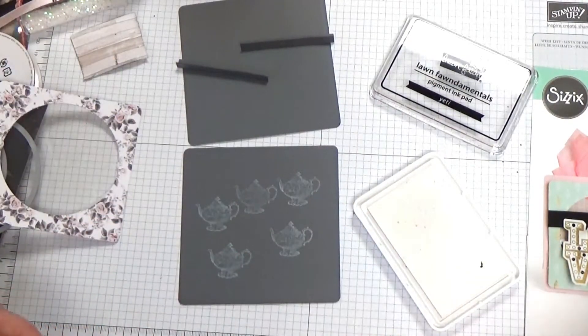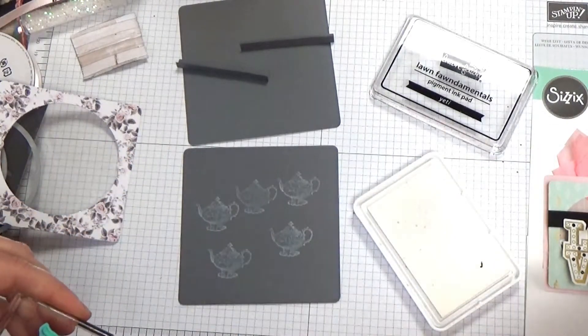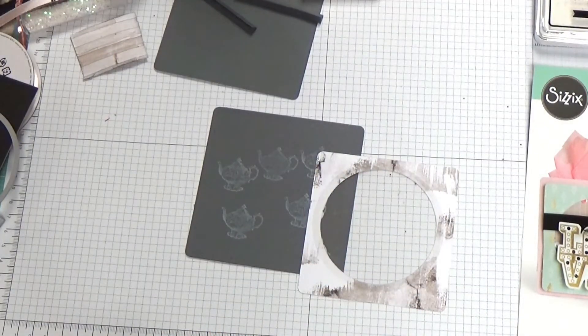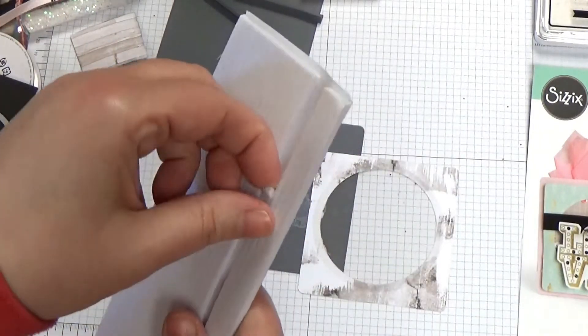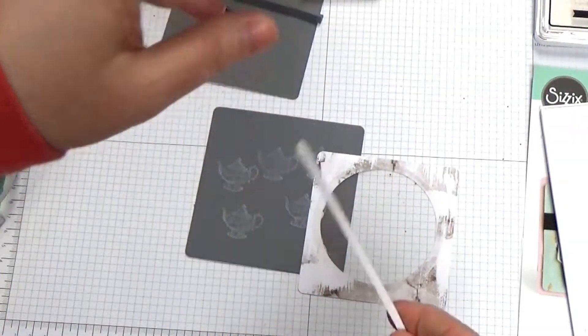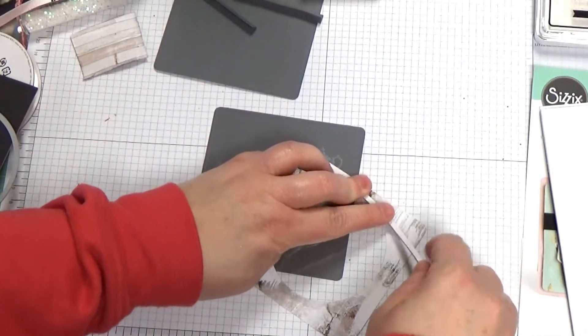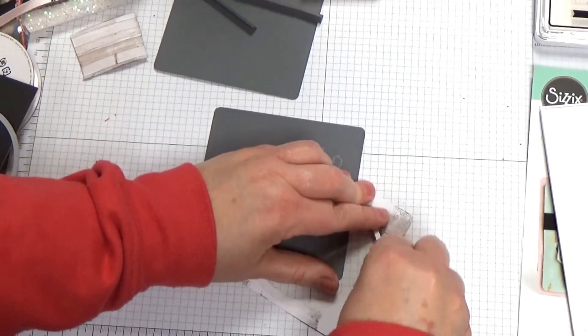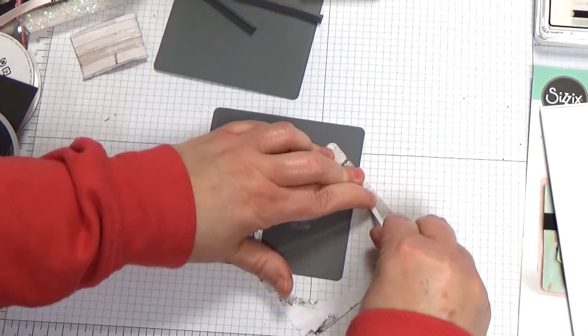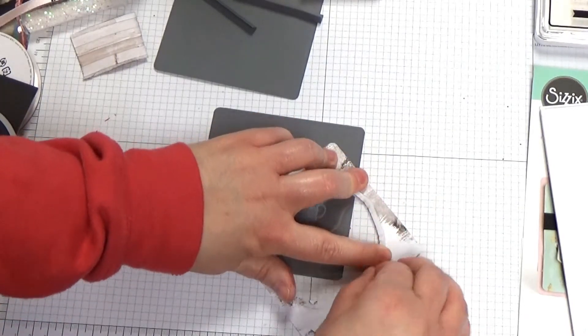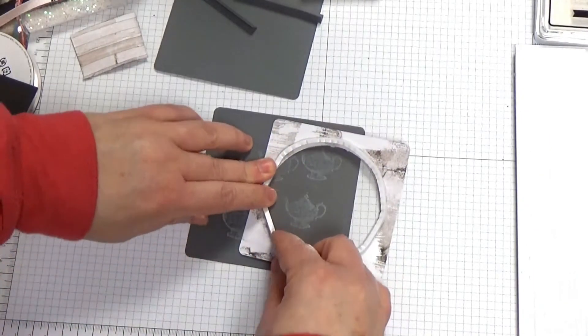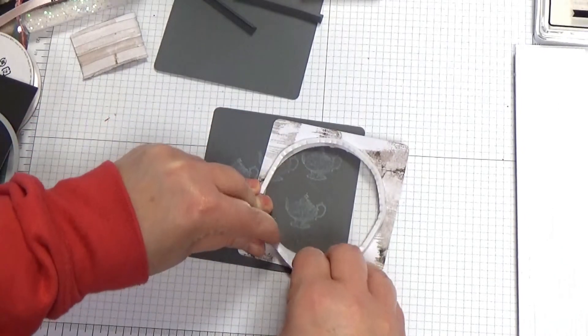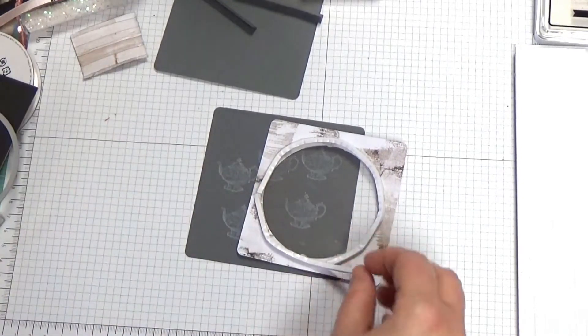These sequins will be bouncing around in here. I'm going to put some foam tape around the edge here. I'm going to use the Stampin' Up strips - they work really nice. You can just go right around this edge and manipulate it to fit around that circle. Don't want to leave any gaps because then our sequins will make their way out.